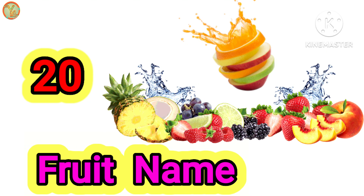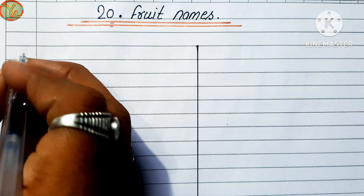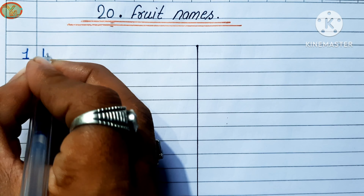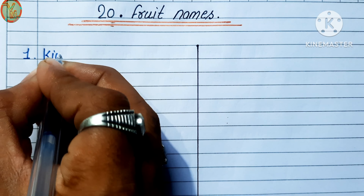Hello friends, today in this video we will see 20 fruits names. Let's start now. First number: kiwi. Kiwi means kiwi.